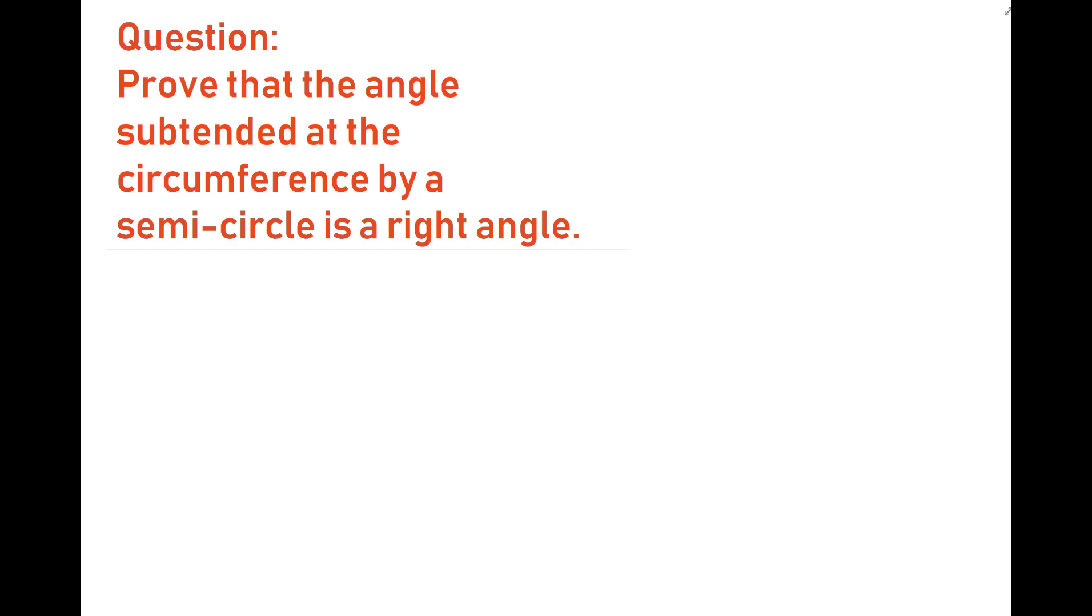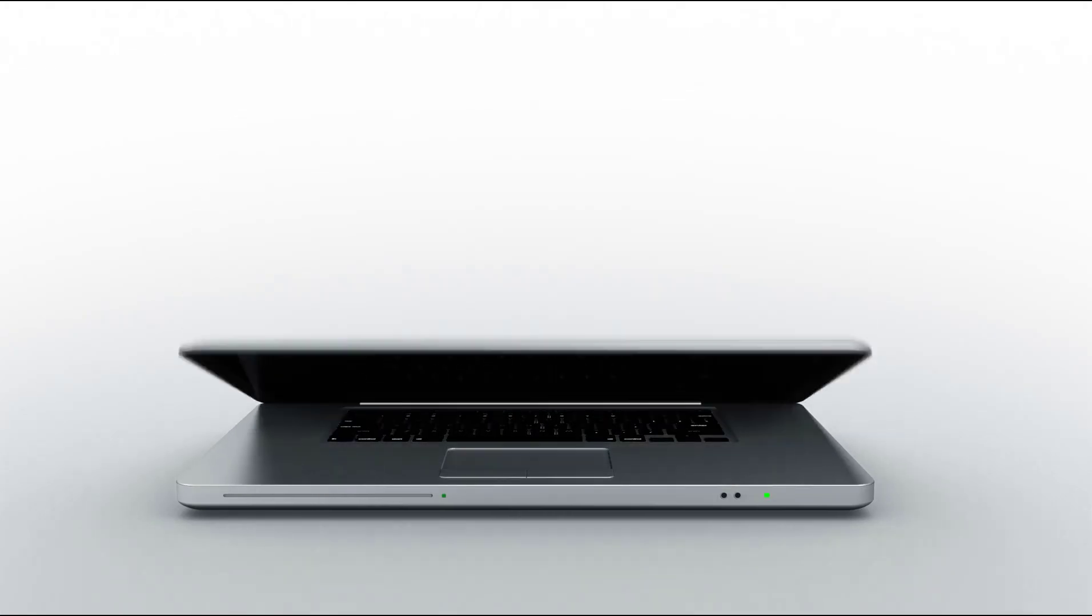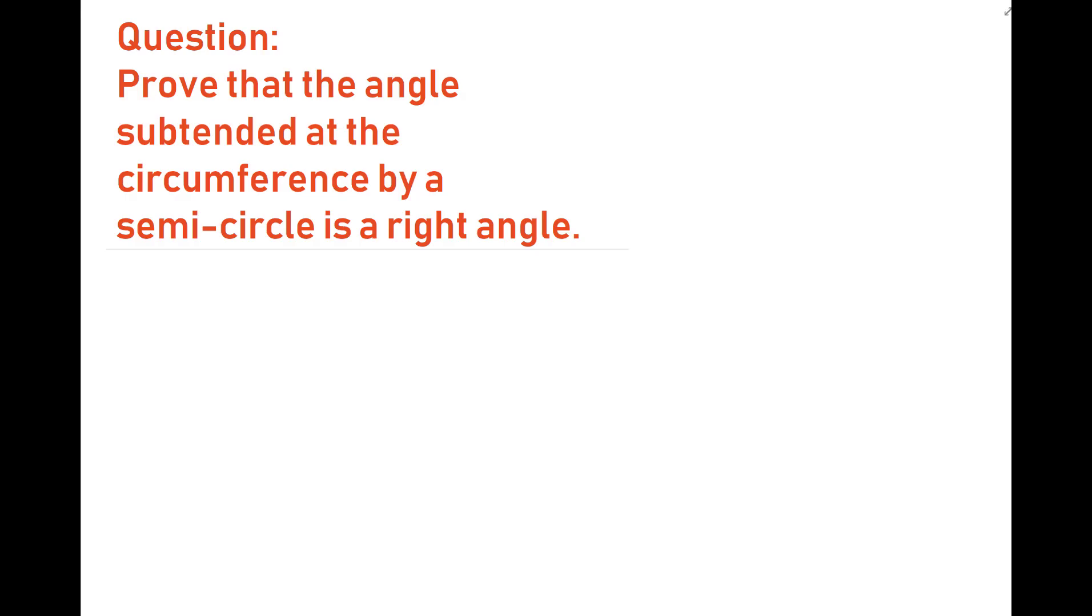Hello everyone, today I will be proving a circle theorem question. The question is: prove that the angle subtended at the circumference by a semicircle is a right angle. So what does it mean by that? Let's start off by drawing a circle.